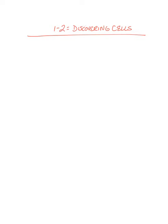We're going to do sketchnotes on Chapter 1, Section 2: Discovering Cells. The first thing we need to talk about is the first sightings of cells. This actually happened because in 1590, the microscope was invented.